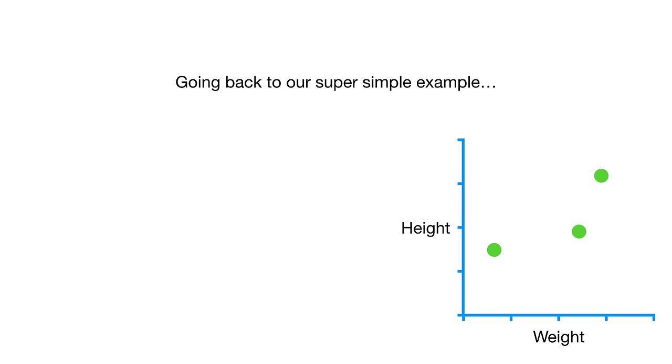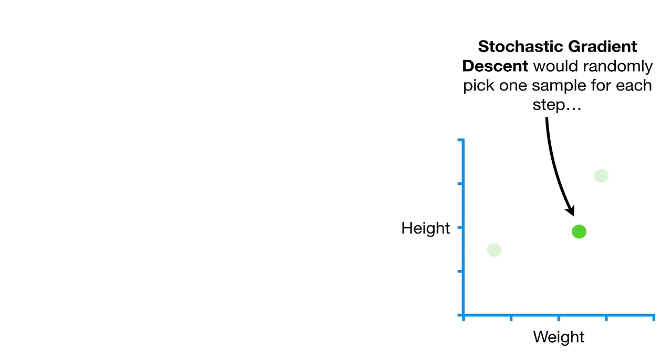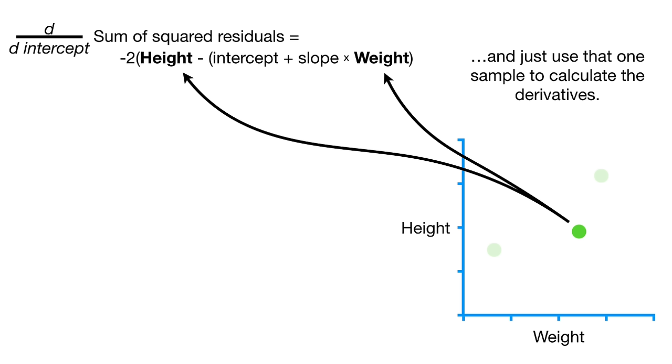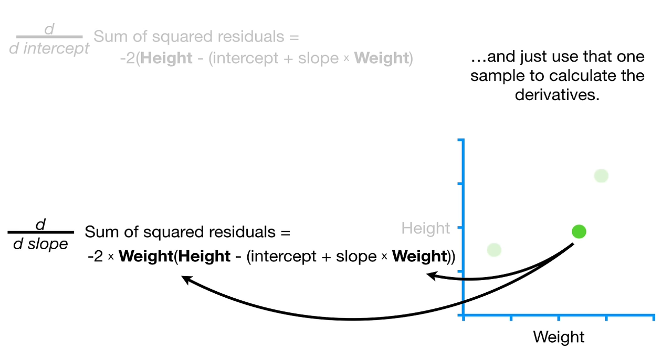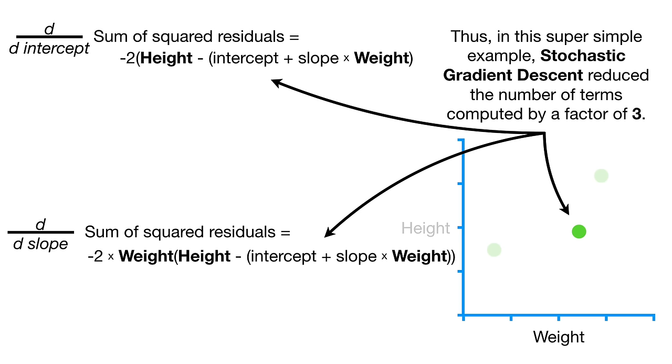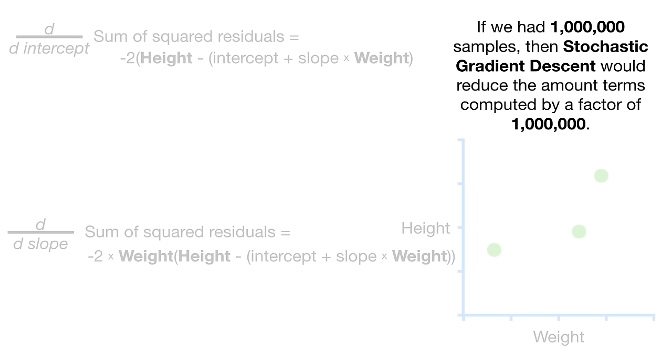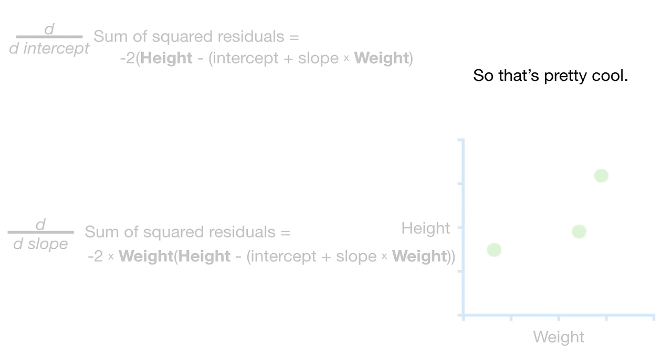Then we will have 23,000 derivatives to plug the data into. And what if we had data from 1 million samples? Then we would have to calculate 1 million terms for each of the 23,000 derivatives. In other words, we'd have to calculate 23 billion terms for each step. And since it's common to take at least 1,000 steps, we would calculate at least 2.3 trillion terms. So for big data, gradient descent is slow. This is where stochastic gradient descent comes in handy.